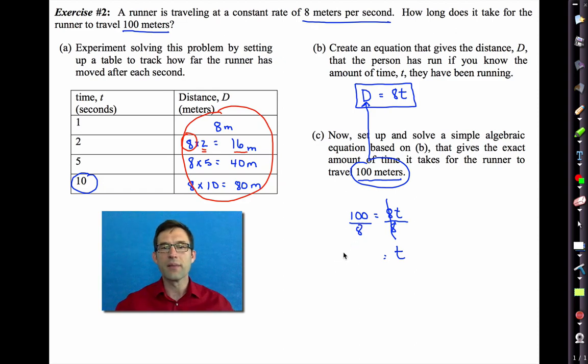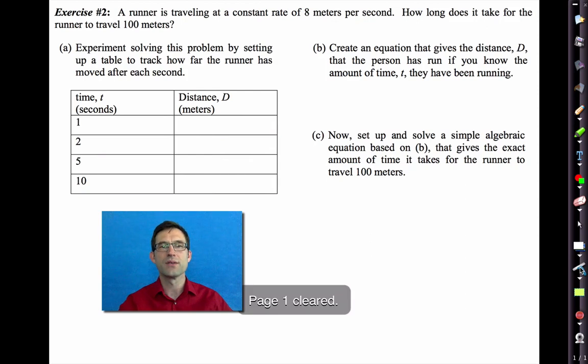Because eight divided by eight is one, we get our t all by itself. 100 divided by eight might not be the nicest number, but you can use your calculator to figure that out. That'll end up being 12.5. So it takes 12.5 seconds. Never forget your units to complete the race. That seems pretty reasonable. Pretty fast runner. Pretty fast. Well, I'm going to scrub out the text. So pause the video now if you need to write anything down or think about anything. Let's keep moving on.